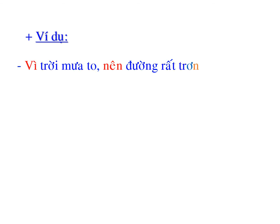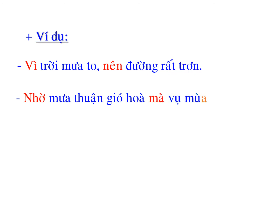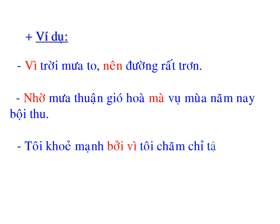Từ những quan hệ từ mà chúng ta vừa tìm được, bây giờ các em cùng suy nghĩ và cho cô những ví dụ nhé. Cô có 3 ví dụ như sau: Ví dụ thứ nhất: Vì trời mưa to nên đường rất trơn - cô sử dụng cặp quan hệ từ vì...nên. Ví dụ thứ 2: Nhờ mưa thuận gió hòa mà vụ mùa năm nay bội thu - cô sử dụng cặp quan hệ từ nhờ...mà. Ví dụ thứ 3: Tôi khỏe mạnh bởi vì tôi chăm chỉ tập thể dục - cô sử dụng quan hệ từ bởi vì.